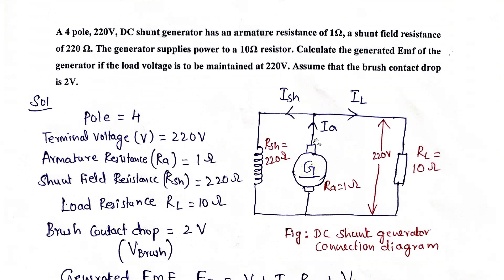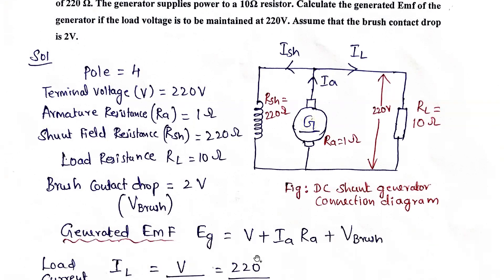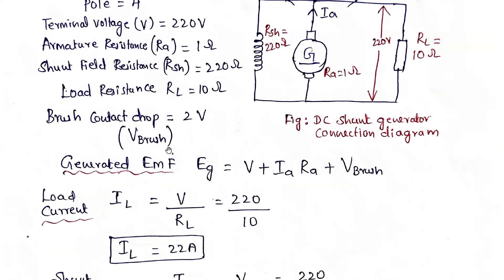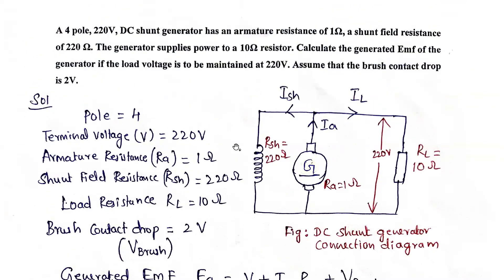First you draw the equivalent circuit connection diagram such that easily - see, this is the armature current, this is the shunt current, this is the load current. Ia is divided into two. So easily you can frame: generated EMF is the terminal voltage plus Ia*Ra drop plus the voltage drop in the brushes. That also you can easily remember and further proceed.